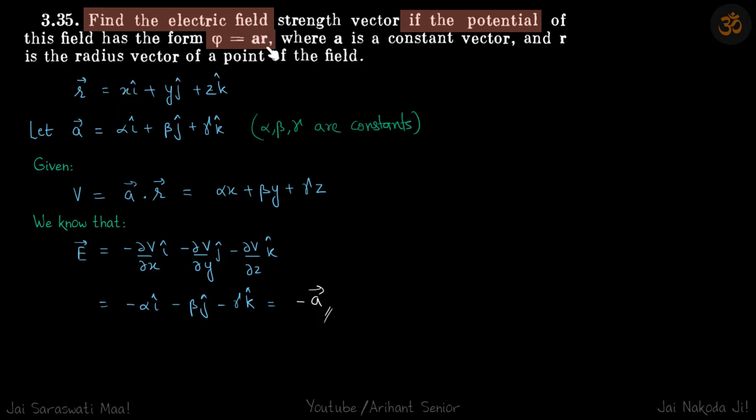So, in a dot r, they are saying that a is a constant vector. So, let's call it alpha i cap plus beta j cap plus gamma k cap. And because it's a constant vector, all these three terms are also constants. And r vector is nothing but a position vector. So, that we can write as xi cap plus yj cap plus zk cap. So, potential is a dot r.